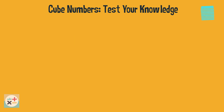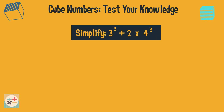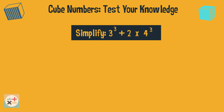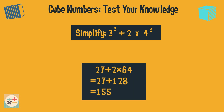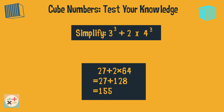Question 6. Simplify 3 cubed plus 2 times 4 cubed. This equals 27 plus 2 times 64, which equals 155.